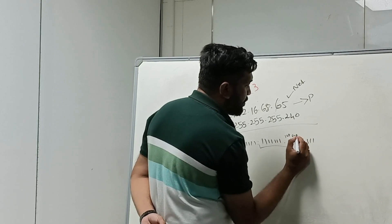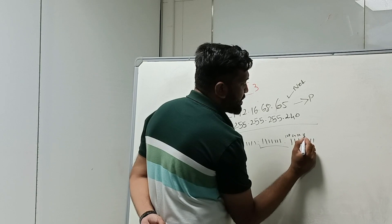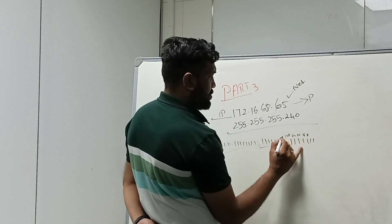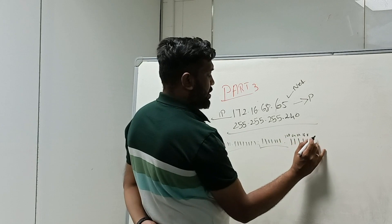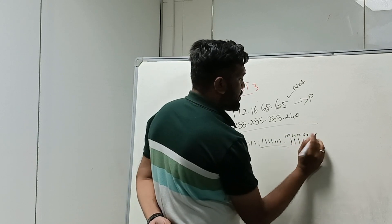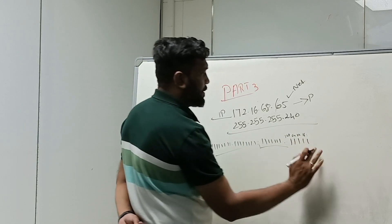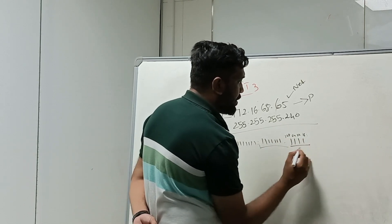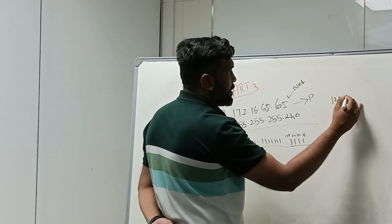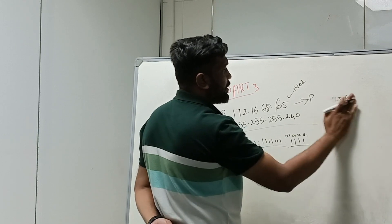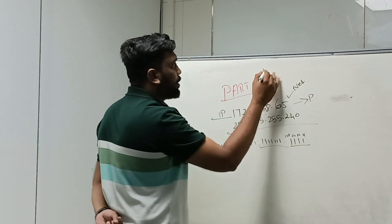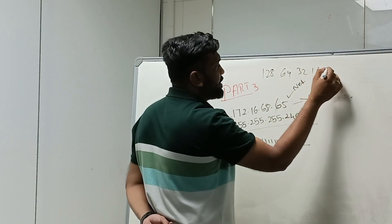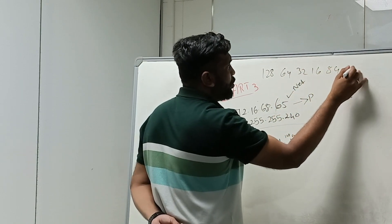The binary bit values are: 128, plus 64, plus 32, plus 16, plus 8. The full set of bit values across the octet is: 128, 64, 32, 16, 8, 4, 2, 1.